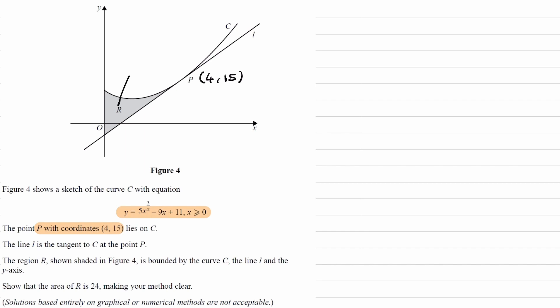So to start this off, we have to work out the equation of the tangent. To do that, we want to differentiate. So consider y equals 5x to the power of 3 over 2 minus 9x plus 11.